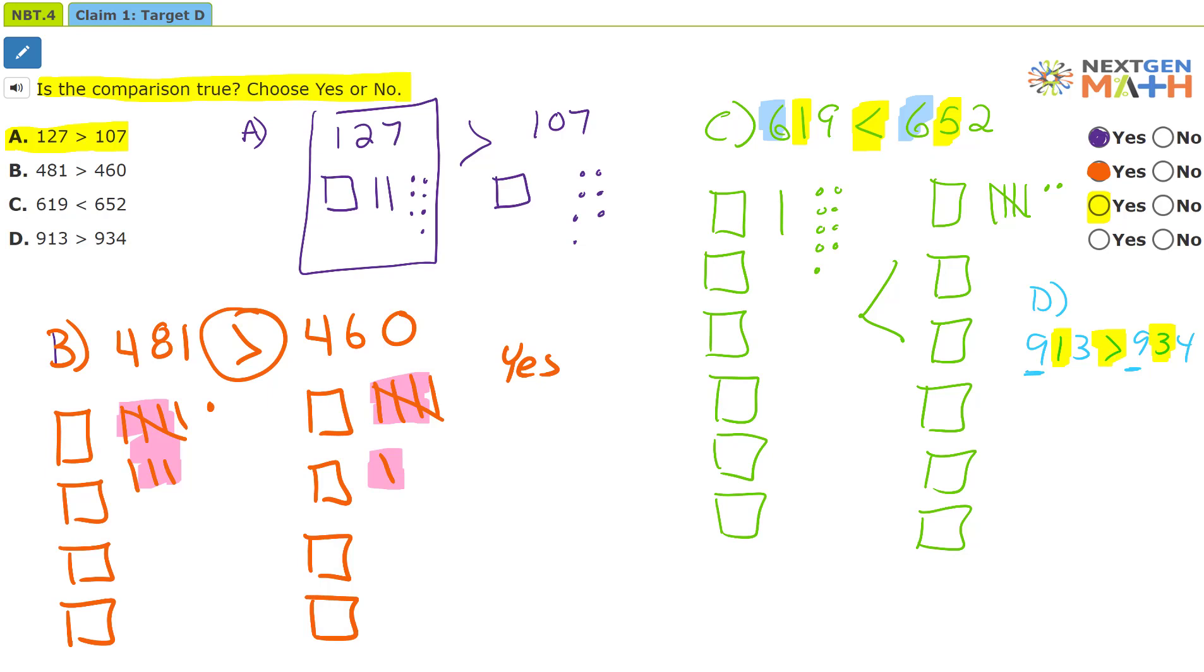That's incorrect. The correct way to write that would be this: 913 is actually less than 934. So D is no.